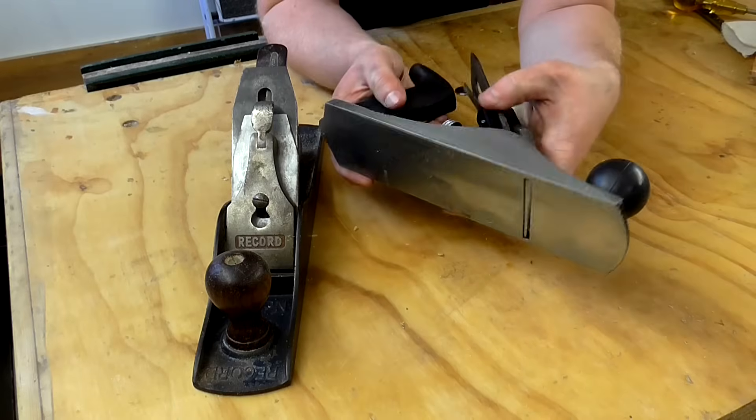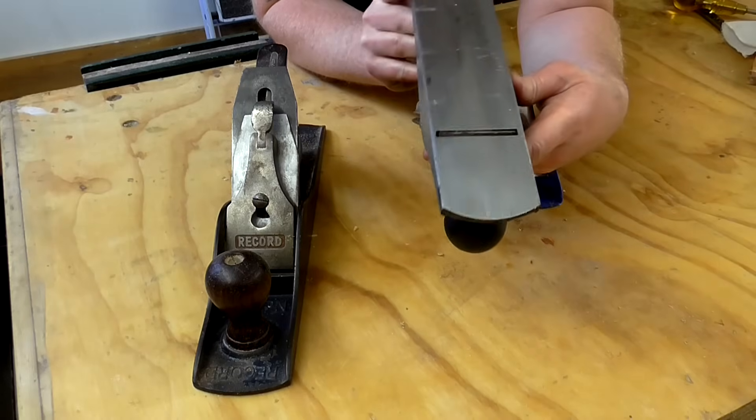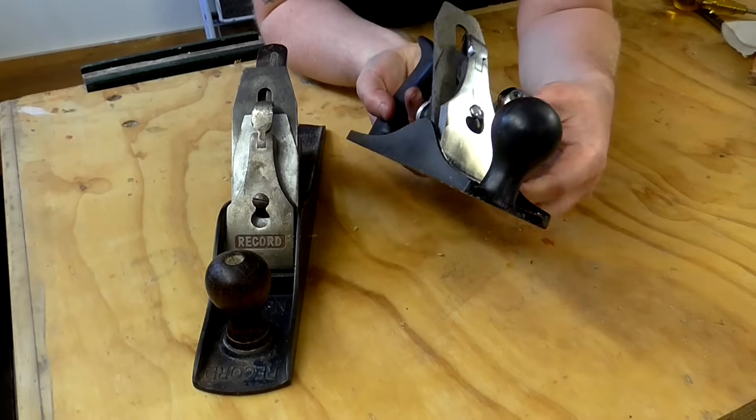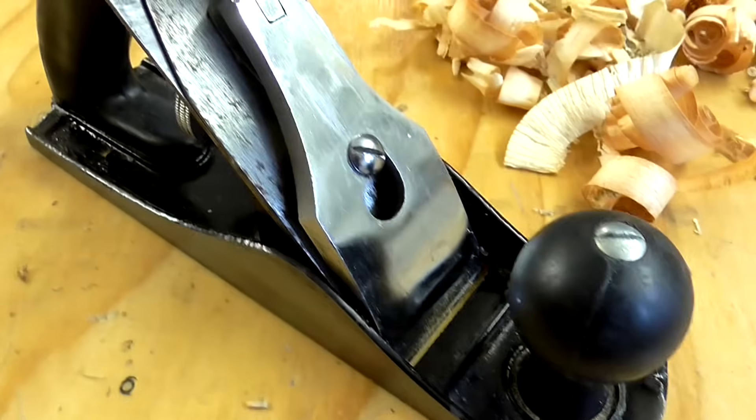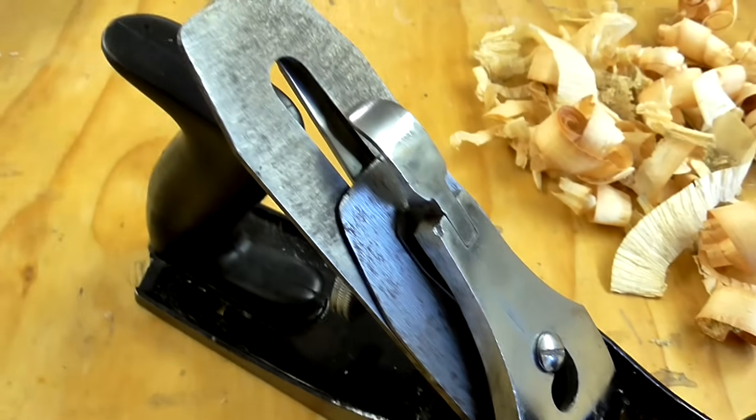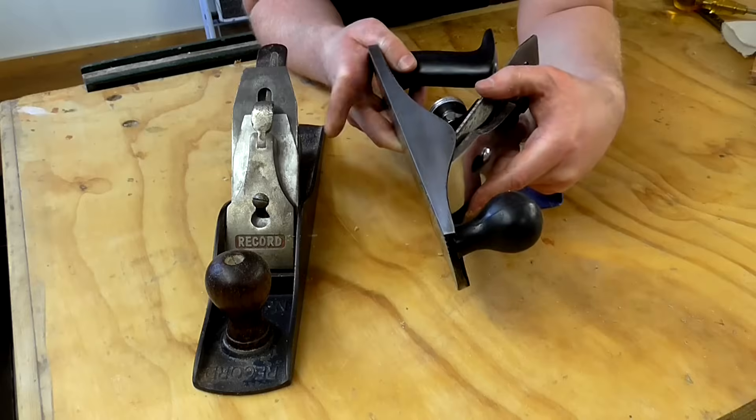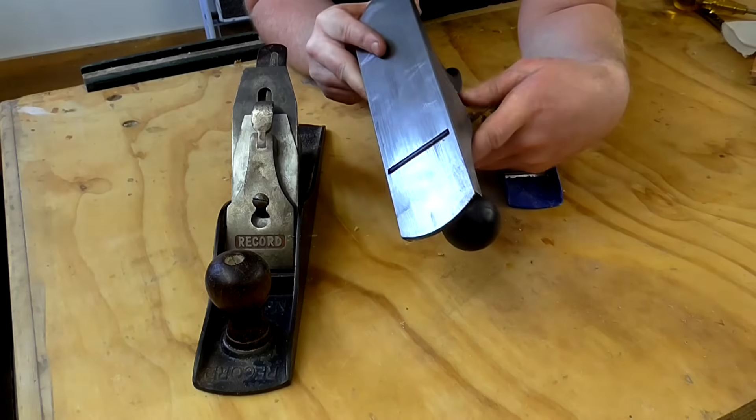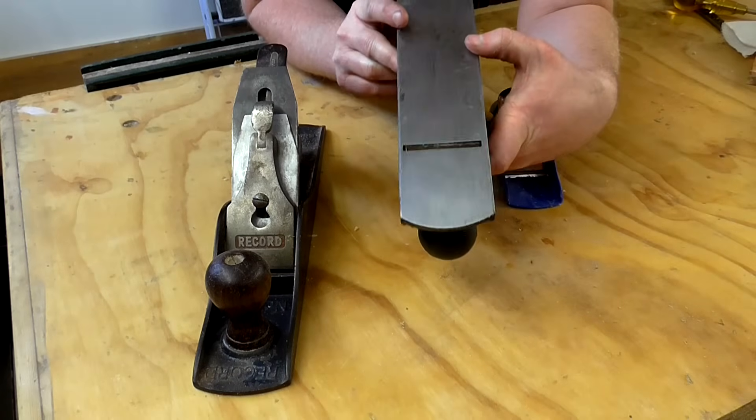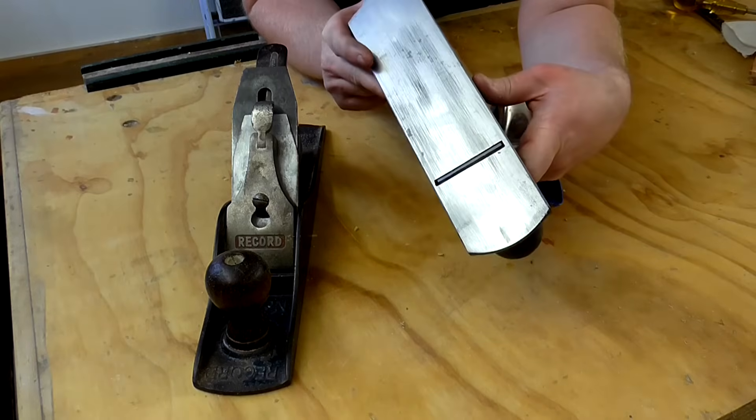This next one is a number four hand plane. And this one doesn't have a brand on it. And to be honest, I don't remember where I got it from. It's probably a really inexpensive model that I picked up from a car boot sale or something like that. And I tend to use this one for more rough work when I don't really know whether I might come across a staple or a nail in some wood for example.